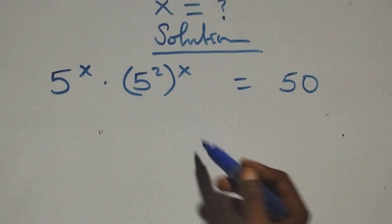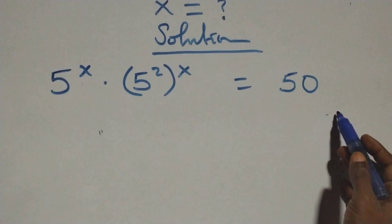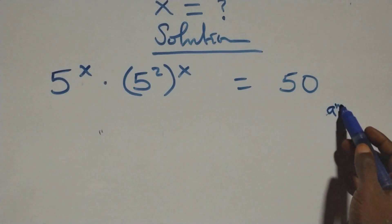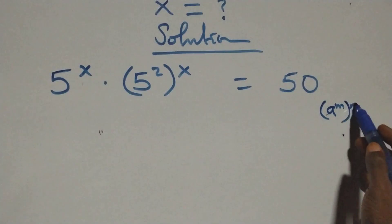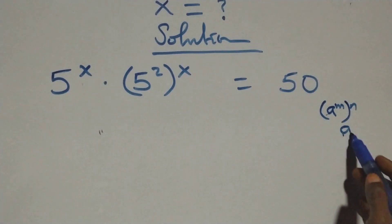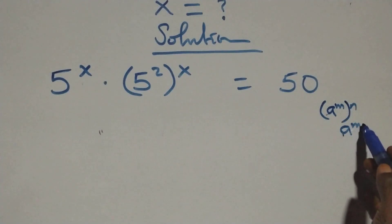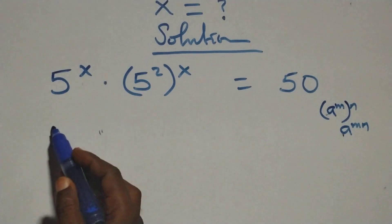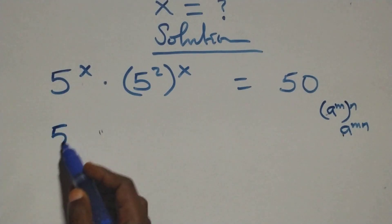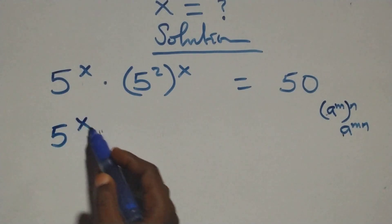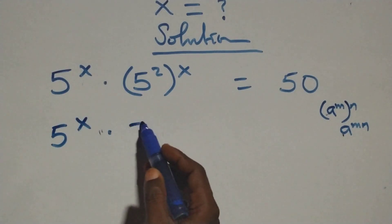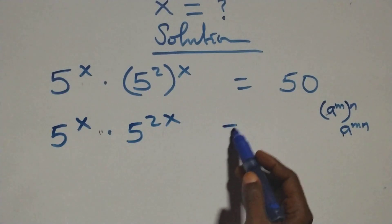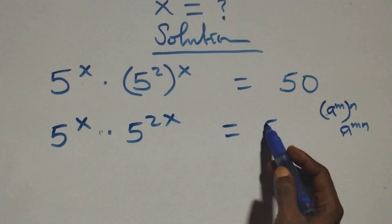This follows a law of indices: when we have a raised to the power m, all raised to the power n, we can write it as a raised to the power m times n. So the power multiplies, and this becomes 5 raised to the power x times 5 raised to the power 2x equals 50.